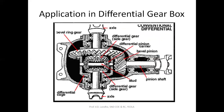The application of bevel gears is in the differential gear box. This is the differential gear box of an automobile or commercial vehicle system. The propeller shaft coming from the gear box is attached to the bevel pinion, and this bevel pinion is in contact with the bevel gear, also called the crown wheel. In between this system we have the left and right axles and the sun and planet gear system.